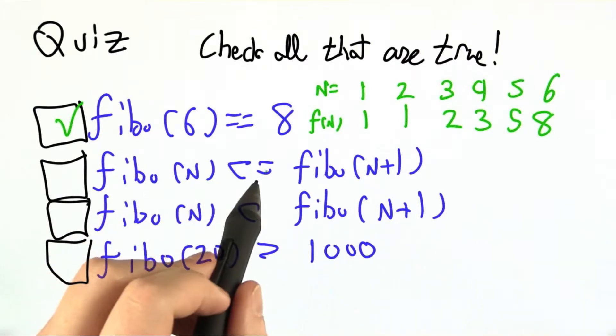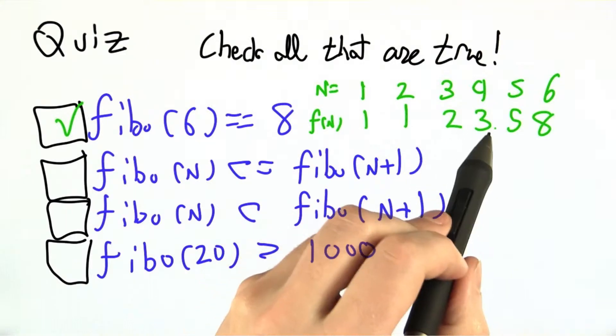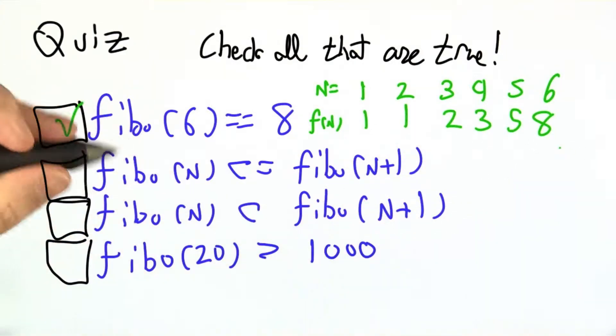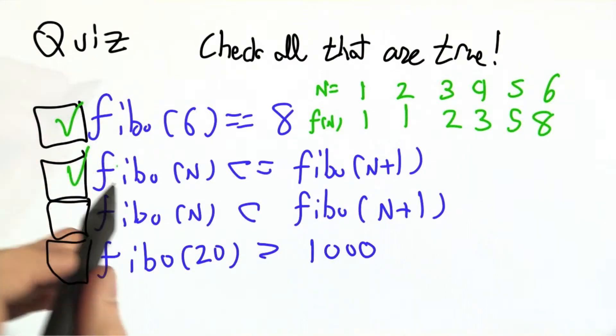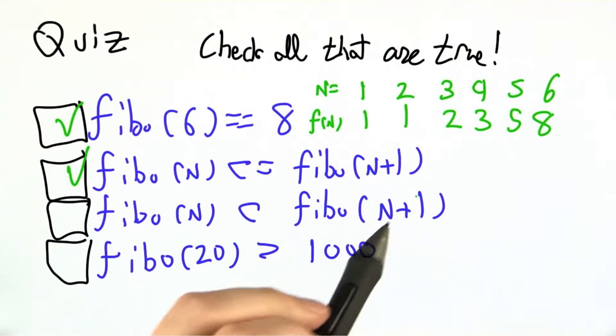Is Fibonacci of n always less than or equal to Fibonacci of n plus 1? Well, 1 is less than or equal to 2, 2 is less than or equal to 3, 1 is less than or equal to 1, 5 is less than or equal to 8. This is certainly true. The Fibonacci sequence is strictly non-decreasing. It either stays the same or gets bigger.